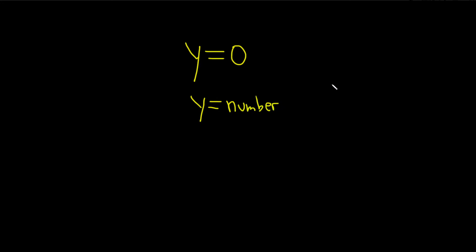you're always going to get a horizontal line, always, no matter what. So if your equation is y equals any number, it's a horizontal line at that number.